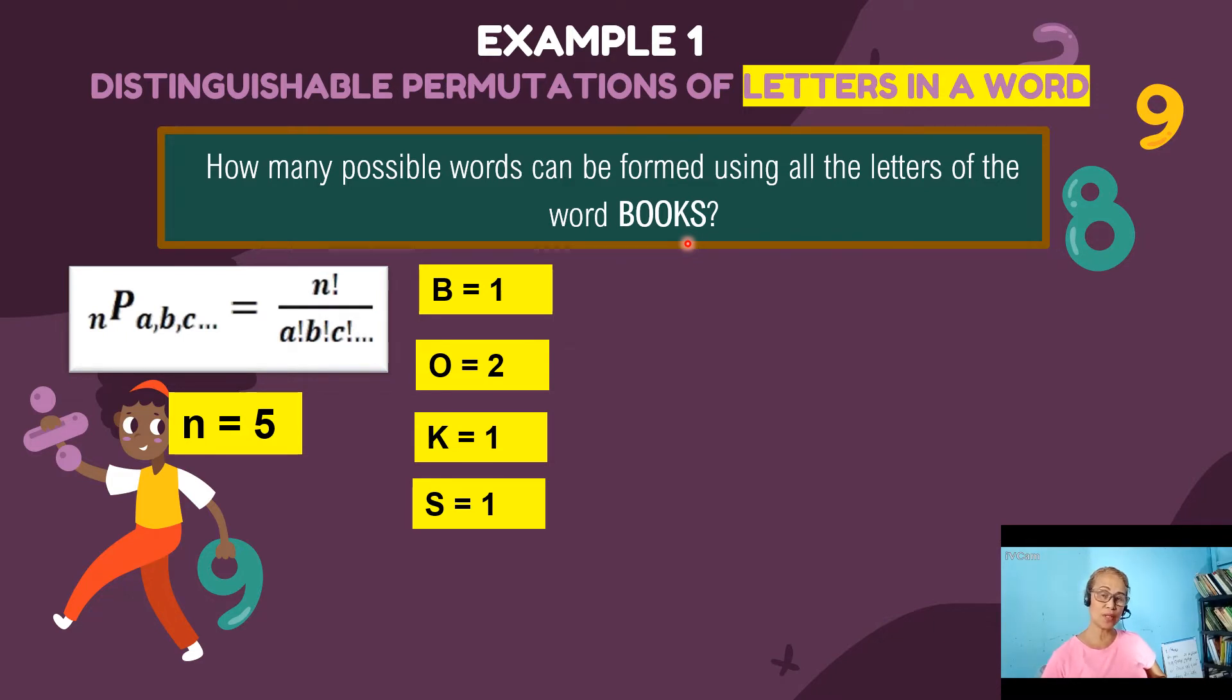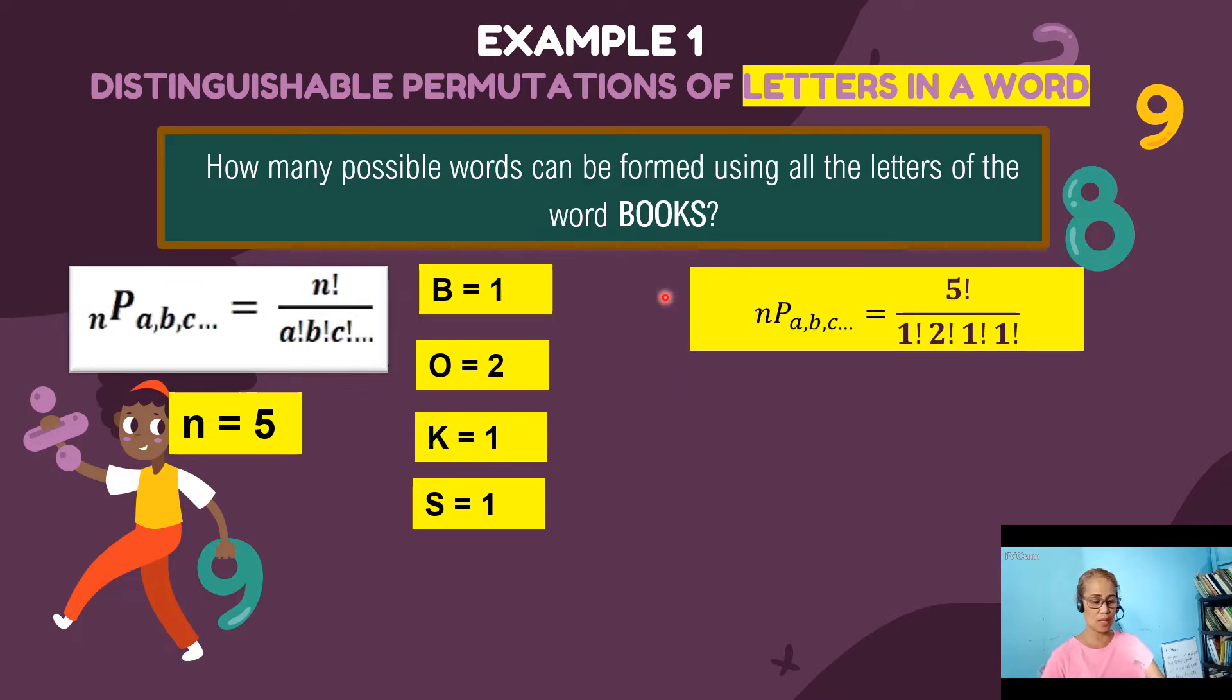Then we are going now to substitute this from the formula n factorial all over a factorial, b factorial times c factorial. So our formula when substituted will become five factorial which is our n. And one factorial is B.